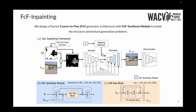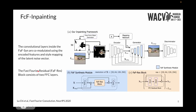In order to solve these issues, we design a Fourier co-mod generator architecture. At the core of our design is a fast Fourier synthesis module that uses co-modulated convolution layers and a fast Fourier residual block. The co-modulated convolution layers take as input the skip connections from the encoder and a style mapping of an input stochastic noise. The fast Fourier residual block is composed of two FFC layers.